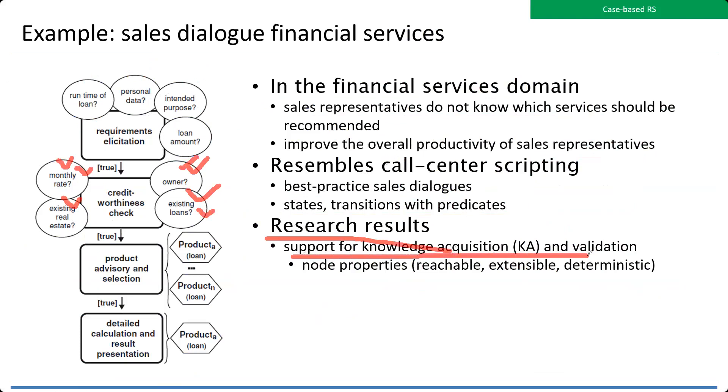The last thing is we can have some kind of node properties to represent particular products. This is from one example of financial service recommendation system based on case-based methods. It improves overall productivity of sales representatives.